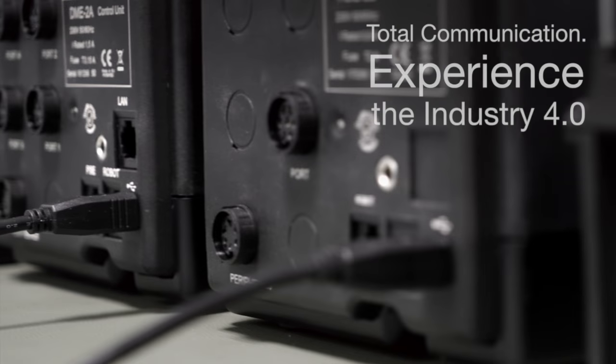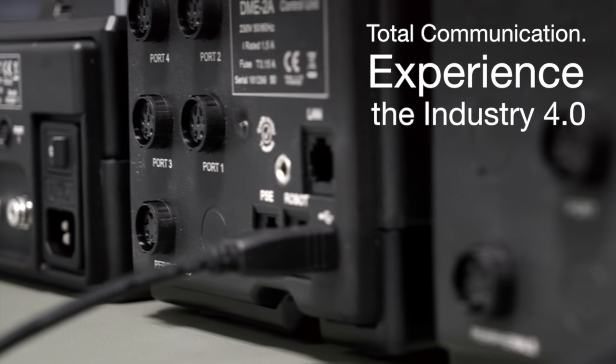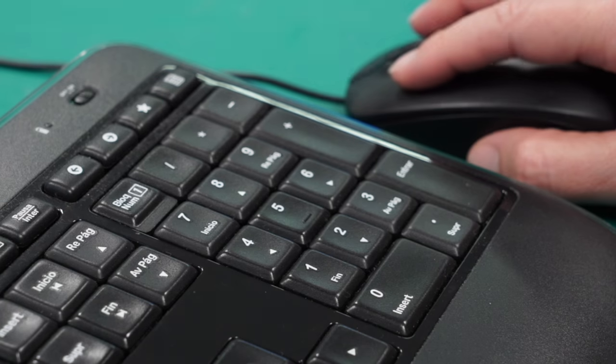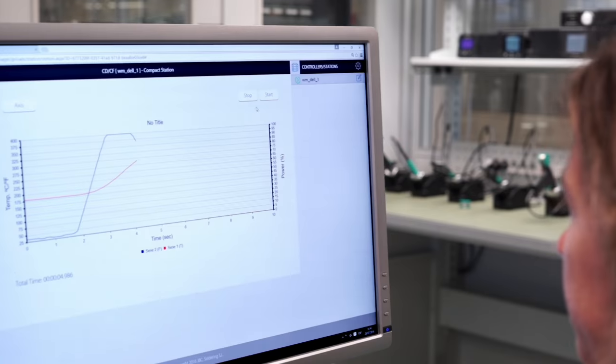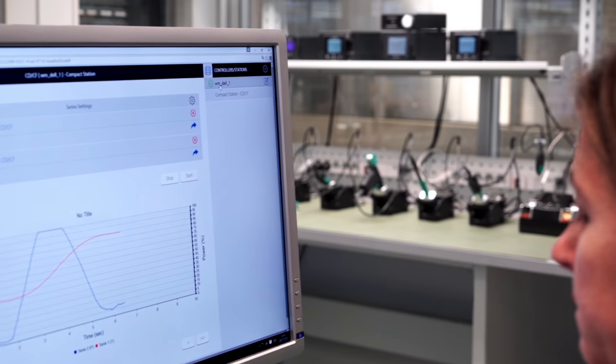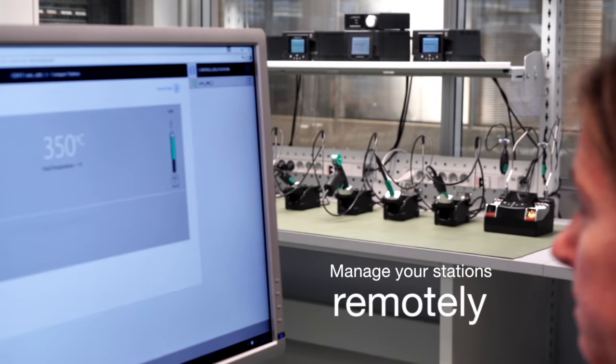The JBC station to PC communication system allows you to configure and manage your stations remotely. You can update the station software, create graphs of the soldering process, and manage or monitor up to 20 personalized parameters via your PC.